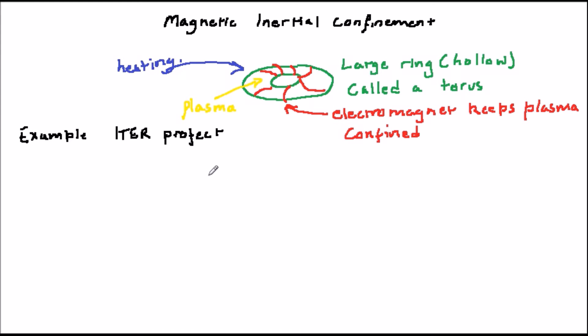The second method is called inertial confinement, and this takes a small bubble of gas and superheats it with massive lasers so that again reactions can take place.